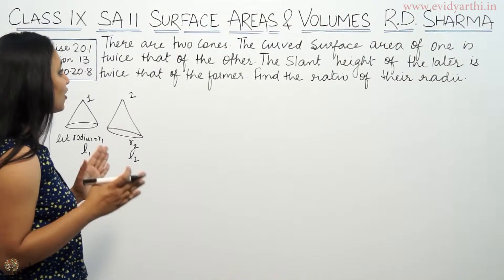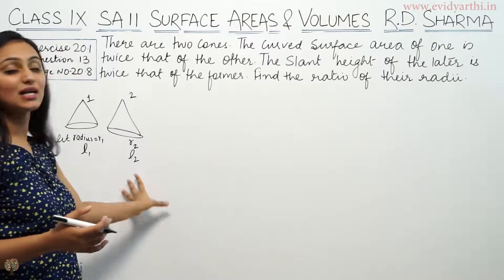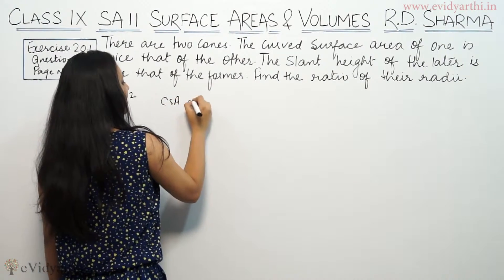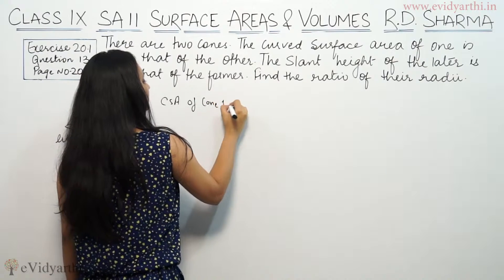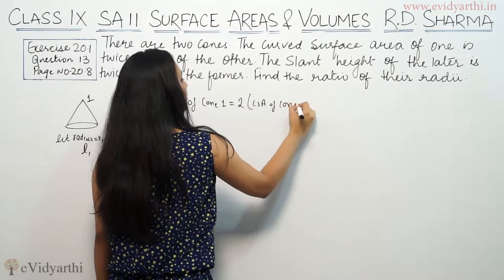So its curved surface area of one is twice that of the other. Its curved surface area is twice that. So CSA curved surface area of cone 1 is twice the CSA of cone 2.